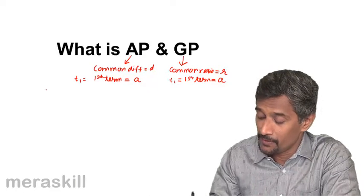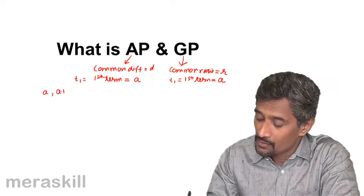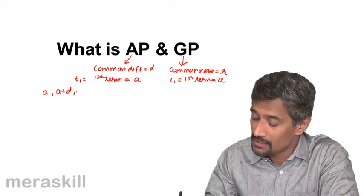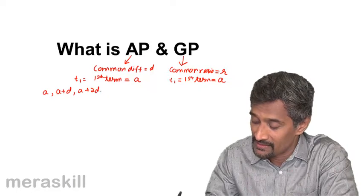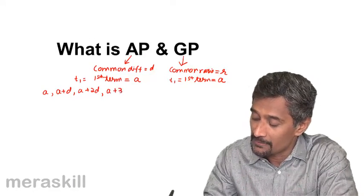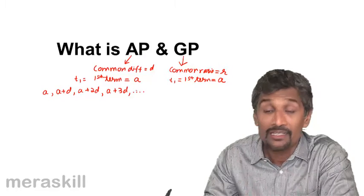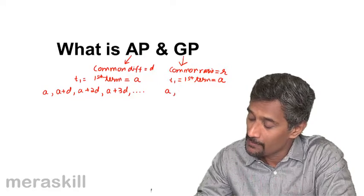How do we relate the first term and the common difference? In this case, the first term would be a, the second term would be a plus d, the third term would be a plus d plus d, which is a plus 2d. The fourth term would be a plus 3d and so on.